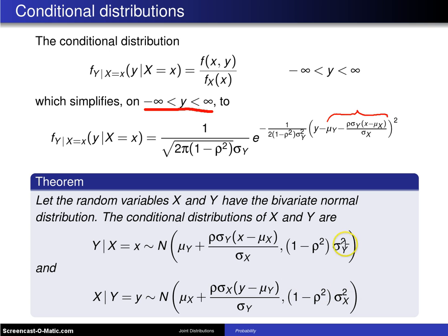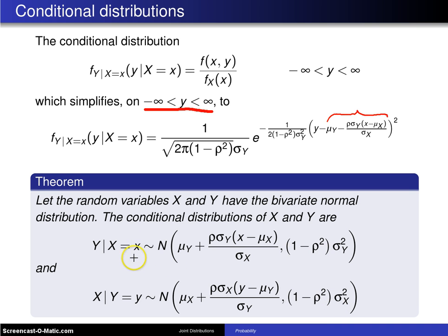One thing to notice is that the two population variances do not involve x or y. They are constant regardless of what value you have for x and y in the conditional distribution.